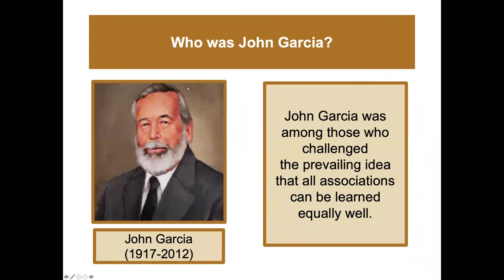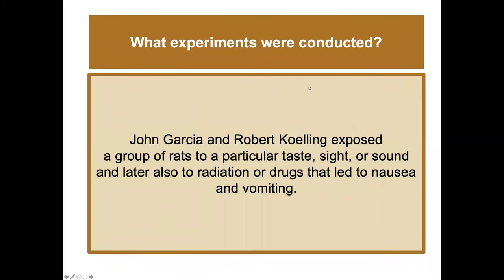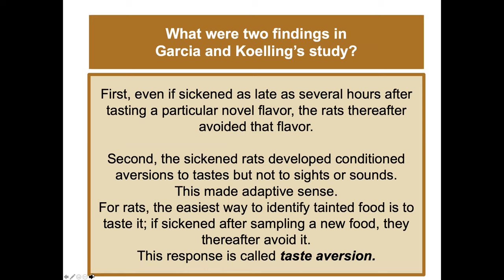John Garcia was among those who challenged the prevailing idea that all associations can be learned equally well. Garcia and Koelling exposed rats to a particular taste, sight, or sound and later to radiation or drugs that led to nausea and vomiting. They found that even if sickened several hours after tasting a new flavor, rats avoided that flavor. The sickened rats developed conditioned aversions to tastes but not to sights or sounds.